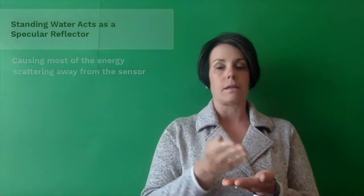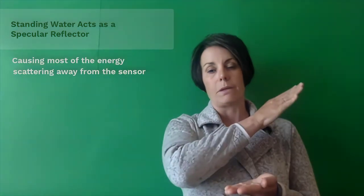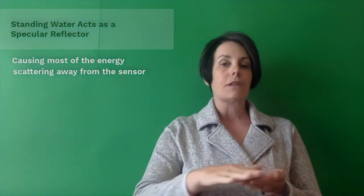Standing water on the soil acts like a smooth specular reflector, causing most of the incident energy to scatter away from the sensor. These flooded areas appear dark on the radar image.